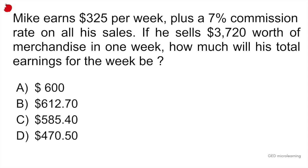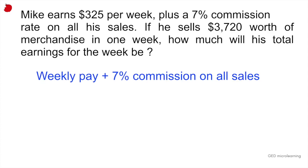When you look at this question, you have to realize that Mike is getting money from two sources. On one side, he has his fixed weekly rate, which is $325, and then he has his commission rate, which can vary from week to week depending on how much he sells. So in this specific week, they're telling you that he made $3,720. In order to find the commission rate on that sale, you would multiply that amount by 7%, and that would give you the commission.